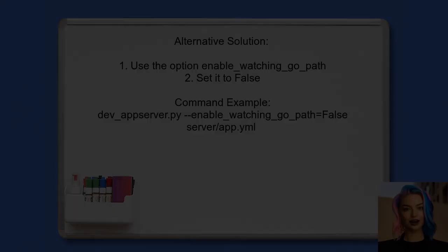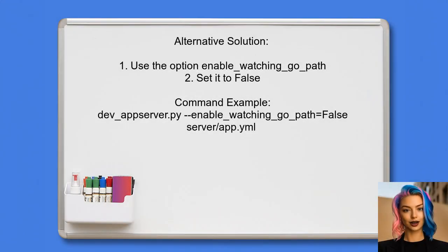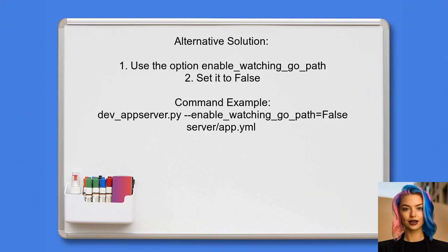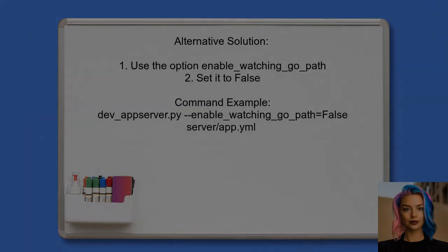An alternative solution from another user suggests a simple fix. They mention that in their version of the Google Cloud SDK, there's an option called Enable Watching GoPath. By setting this option to false, they were able to remove the warning about too many files being monitored.